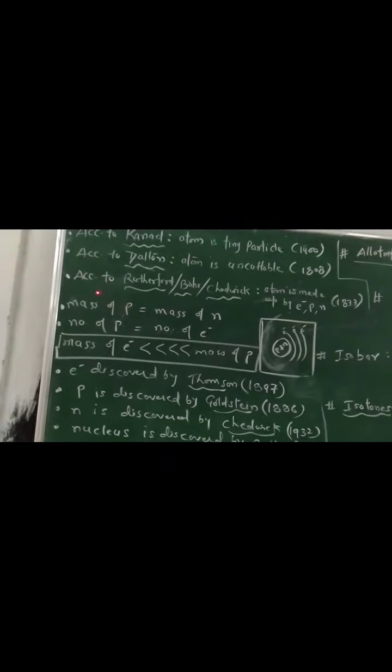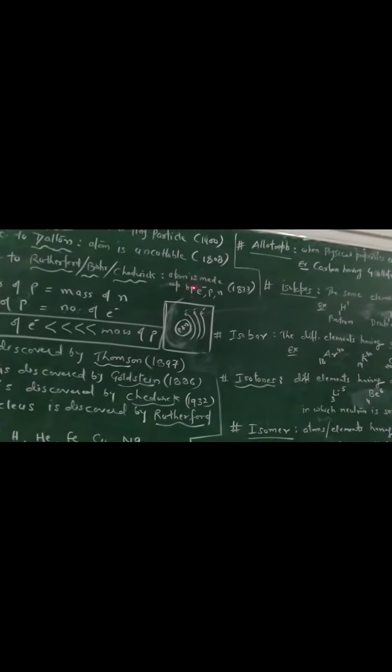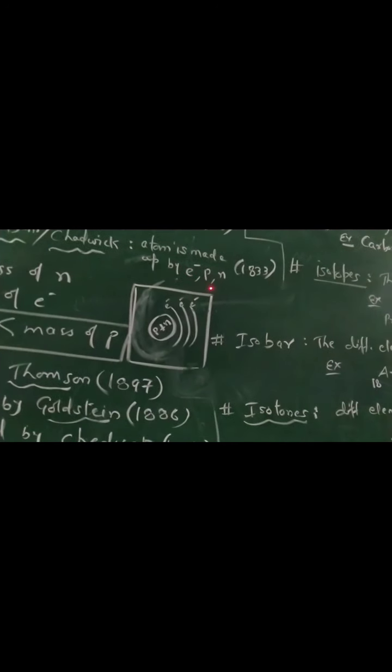After that, some scientists came. The main scientists I'm writing are Rutherford, Bohr, and Chadwick. What did they say? Atom is a tiny particle, it is uncuttable, but atom is made up of electron, proton, and neutron.